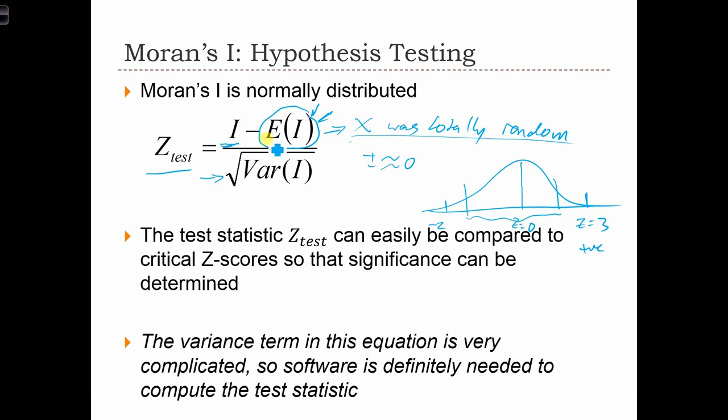Now, we're going to see equations for the expected value of I, but the variance of I is way too complicated to understand at our level of mathematics and our knowledge of probability. So we're just going to be using the computer to calculate z-scores from Moran's I. We're never going to have to calculate the value of this standard error manually.